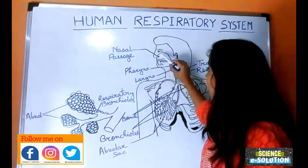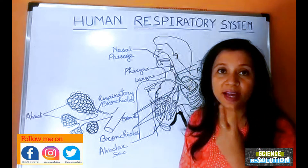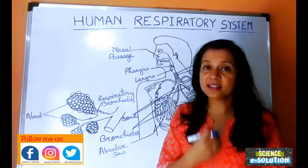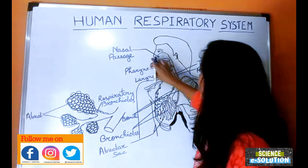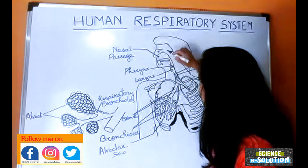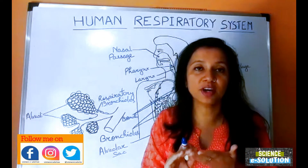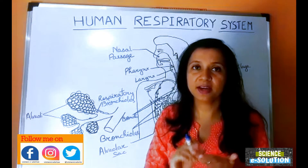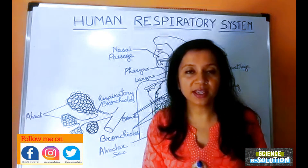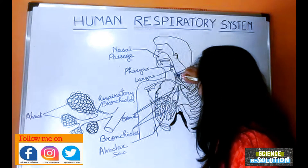First, the air enters our body through the nose. In our nose we have two openings called nostrils, and the air enters through the nostrils into the nasal passage. The lining of our nose consists of mucus and hairs — these hairs and mucus filter out the air, removing dust particles or any foreign bodies, and prevent them from moving further into our respiratory system.